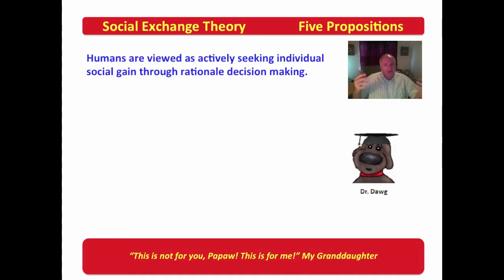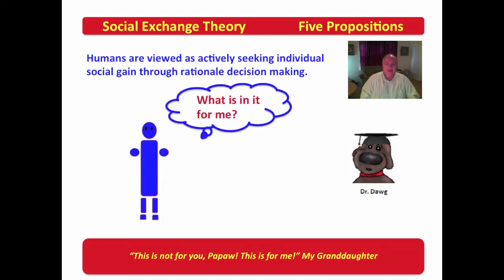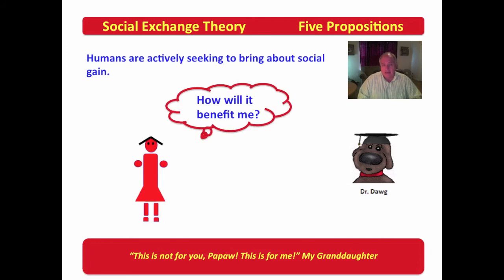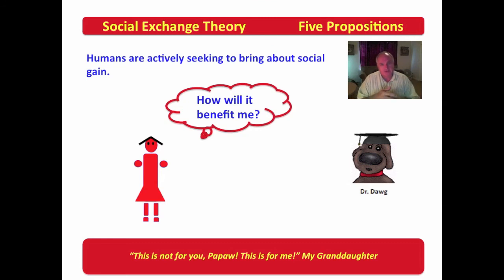Humans are viewed as actively seeking individual social gain through rational decision making. The question might be asked: what's in it for me? This might seem selfish, but Homans doesn't label it as selfish or unselfish — he simply says that based on exchange theory, this is the way it occurs. Humans actively seek to bring about social gain and may ask: how will it benefit me? The goal is advancement socially in interaction with others, having more benefit returned than the cost put forward.